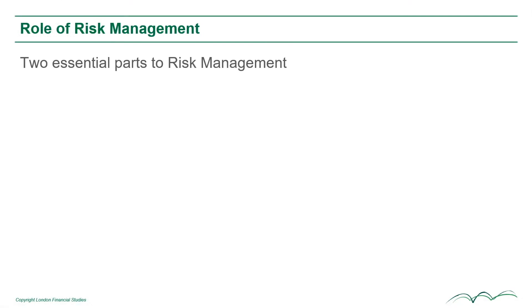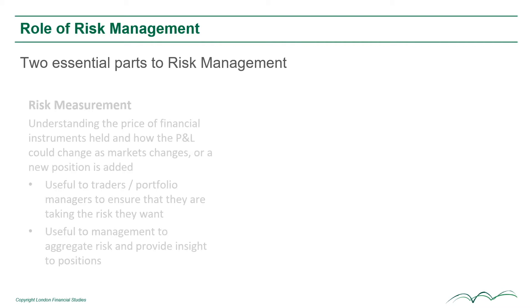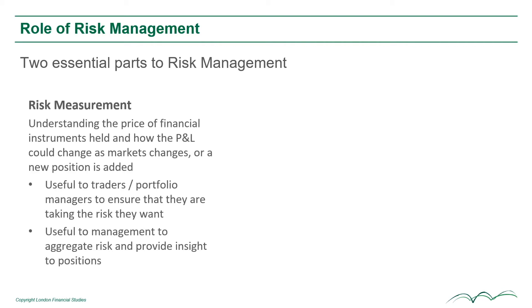There are two essential parts to any process of risk management. The first is risk measurement. This is understanding the price of financial instruments held and how the P&L of an institution could change as markets change or a new position is added. Risk measurement is useful both to traders and portfolio managers to ensure that they understand the risks that they are taking.